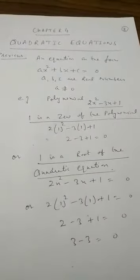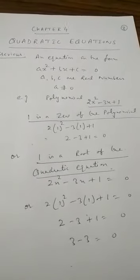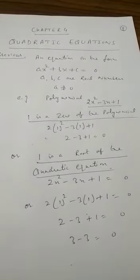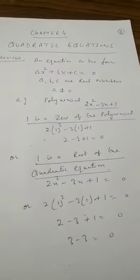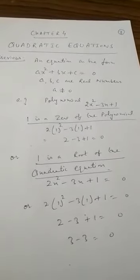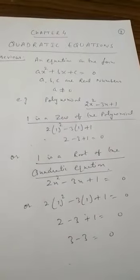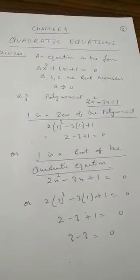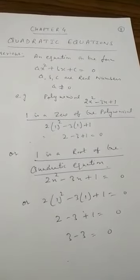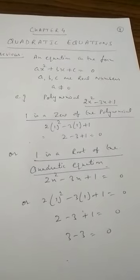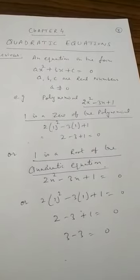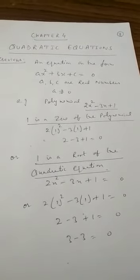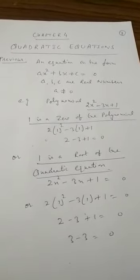Now if we take the polynomial 2x squared minus 3x plus 1 and we replace x by 1, we get the answer 0, or we can say 1 is a zero of the polynomial 2x squared minus 3x plus 1. Similarly, if we take the quadratic equation 2x squared minus 3x plus 1 is equal to 0 and x is replaced by 1, again we get 0, or we can say 1 is a root of the quadratic equation. So, zero for a quadratic polynomial and root for a quadratic equation.